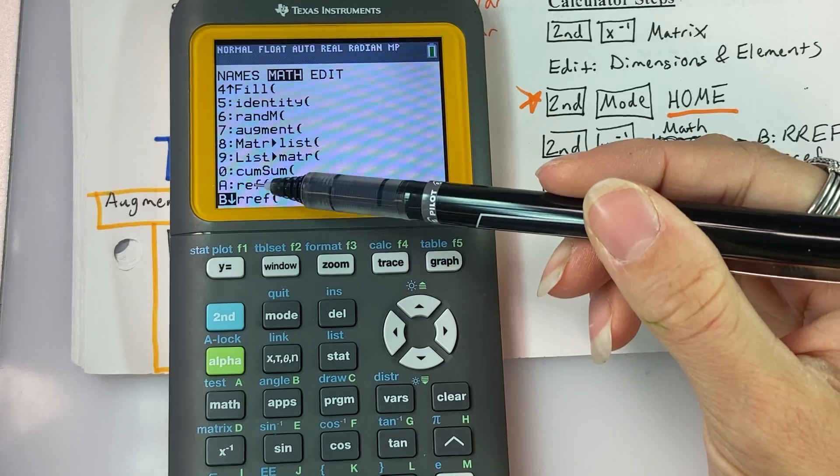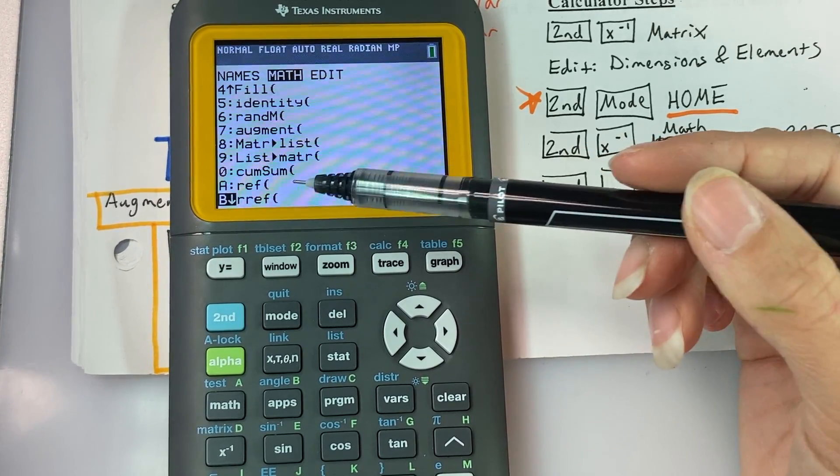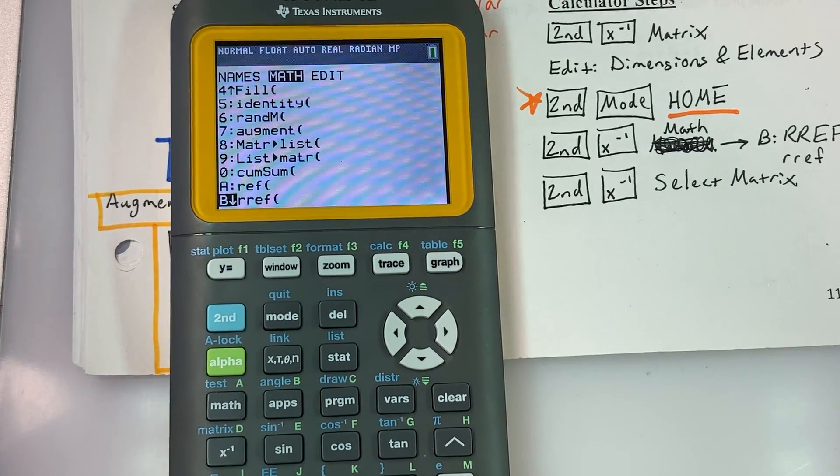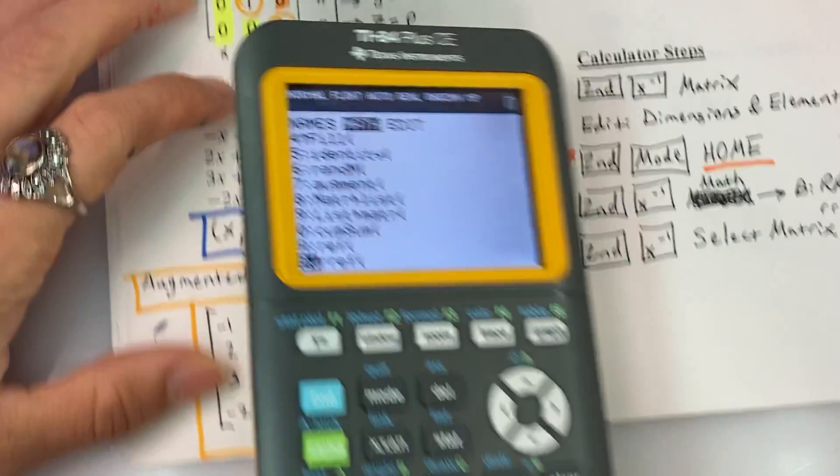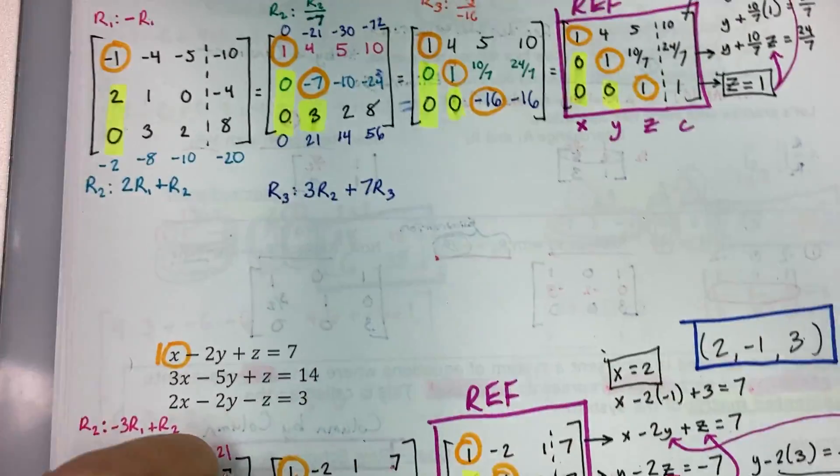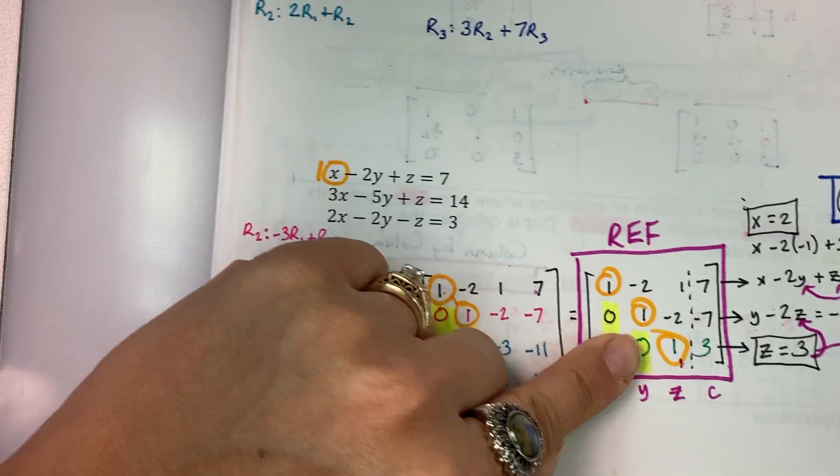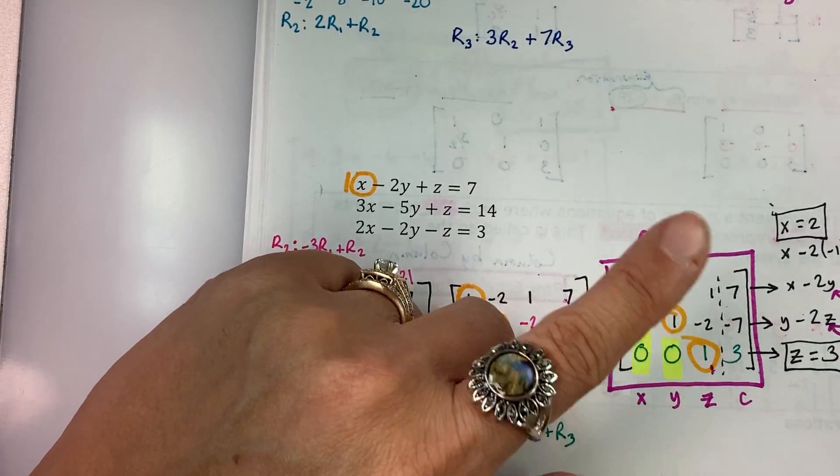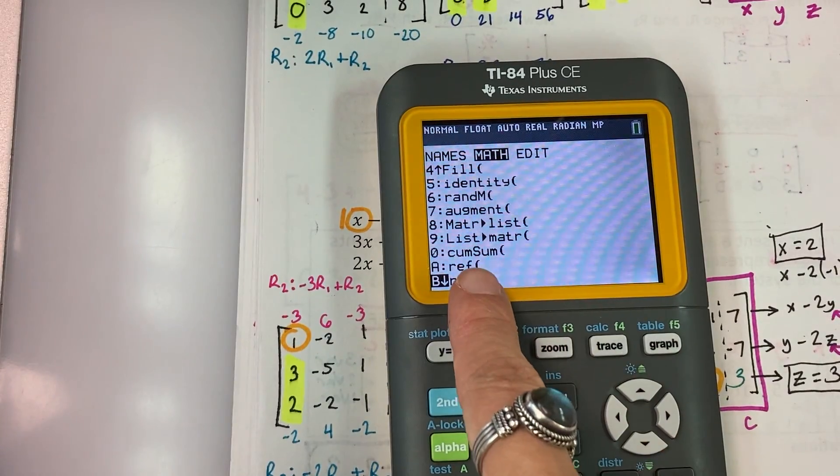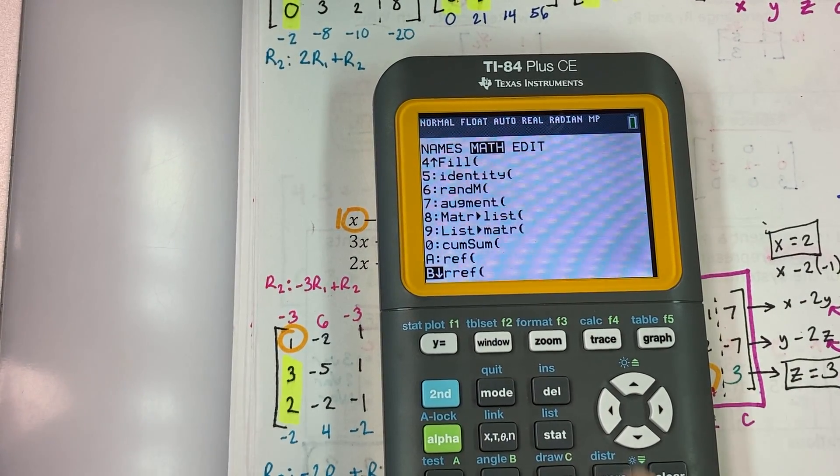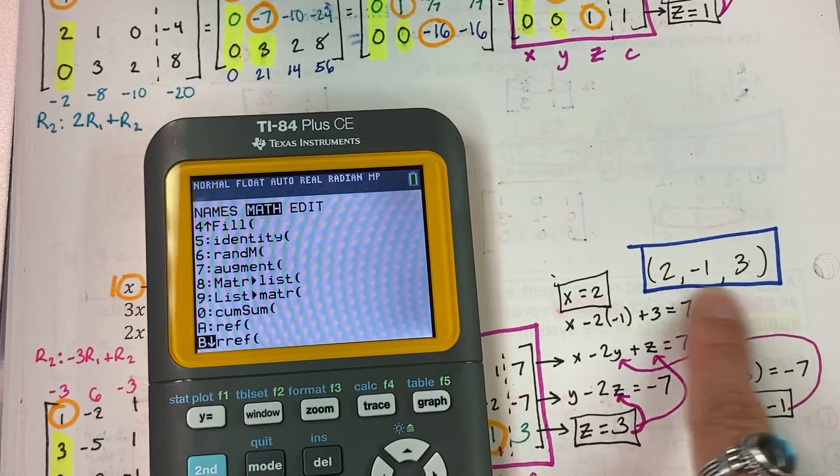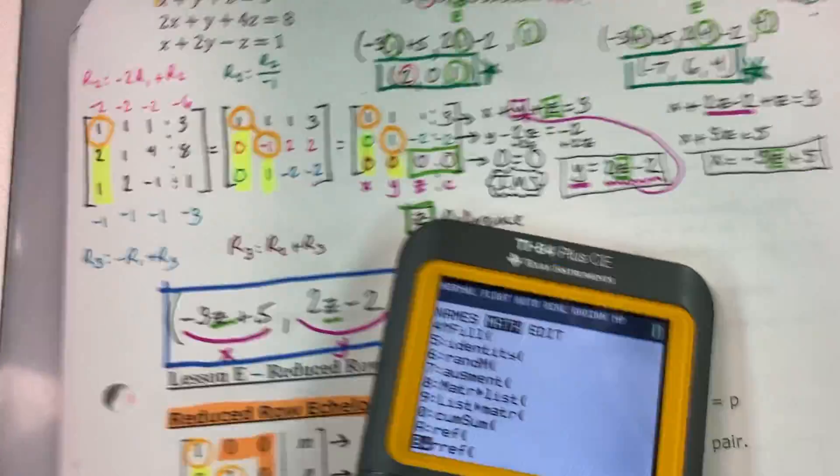Now, if you're getting excited going, oh, there's row echelon form, your calculator sometimes doesn't do the best row operation stuff. So if you use it to check your actual row echelon form matrix, like for this problem or this problem, you actually almost 80 to 90% of the time will get a different matrix. So I don't recommend using REF to check your matrix work here. I do recommend that you use your RREF to check your coordinate answer to see if you have done that correctly.